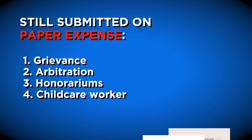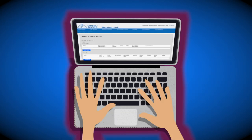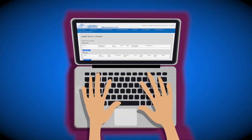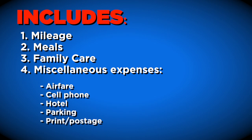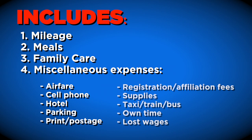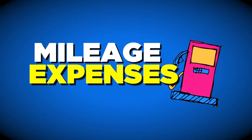All grievance arbitration honorariums or OPSU child care worker expense claims must still be submitted on paper expense claims at this time. Once you've entered into your e-claim, you'll be able to add your expenses. These include mileage, meals, family care, and miscellaneous expenses like airfare, cell phone, hotel, parking, print postage,